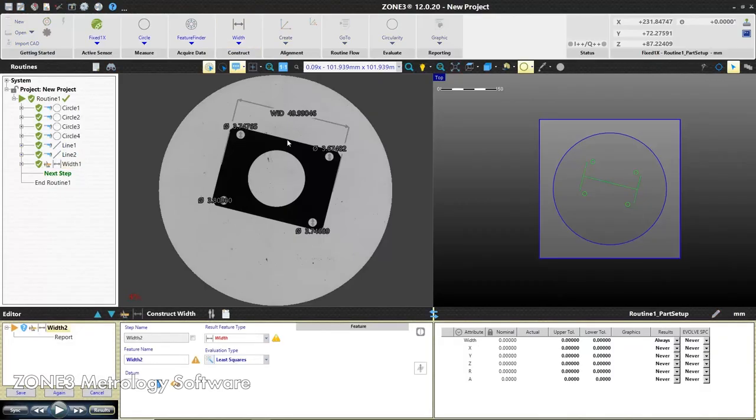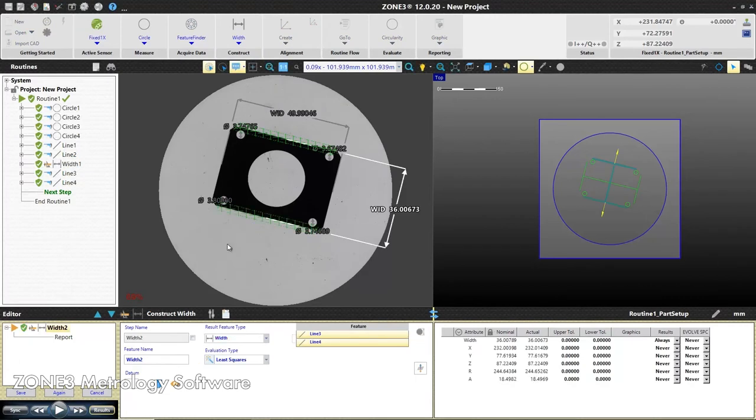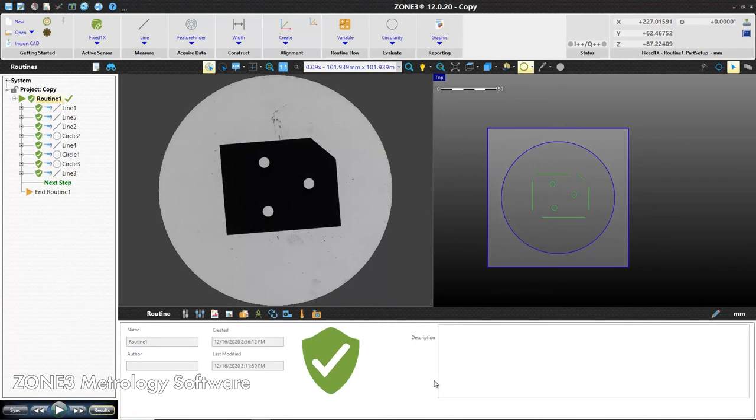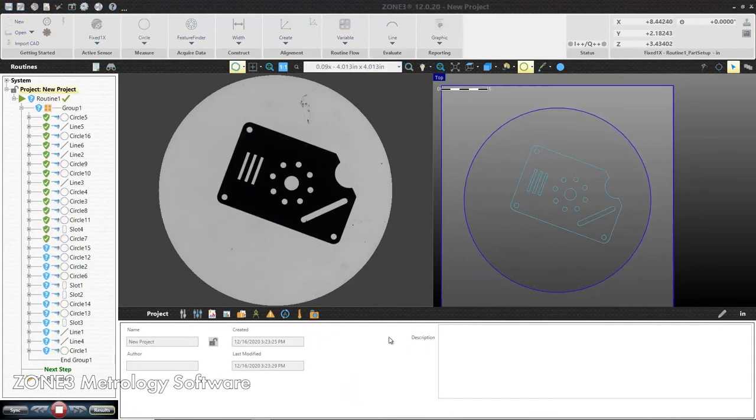Zone 3 is a fast, capable and easy to use measurement software, perfect for a production environment. Full field parallel processing combined with intelligent routine optimization can be used to measure as many features as can be seen simultaneously.